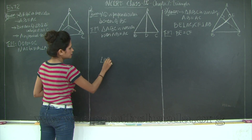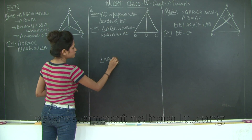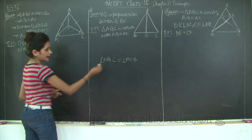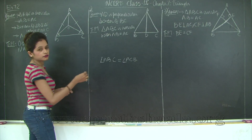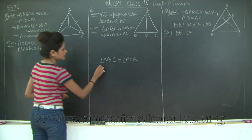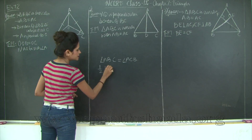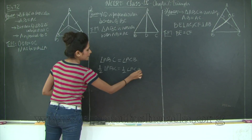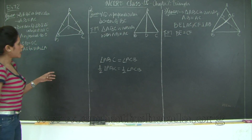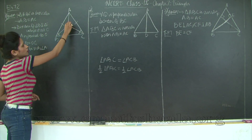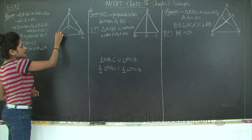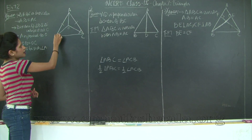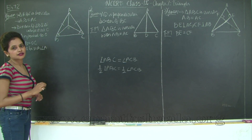Angle ABC is equal to angle ACB — angles opposite to equal sides of an isosceles triangle. Therefore half of angle ABC is equal to half of angle ACB. Now to prove BO equal to CO, if I prove that angles OBC and OCB are equal, my triangle BOC will become isosceles.